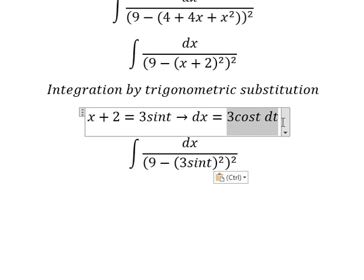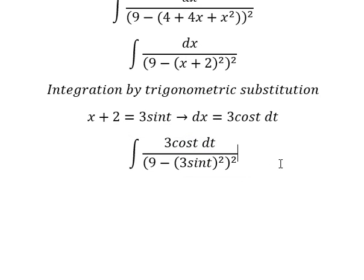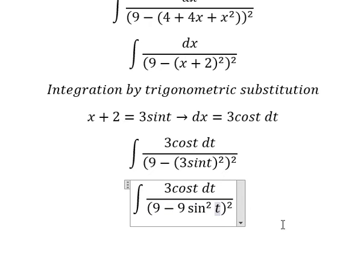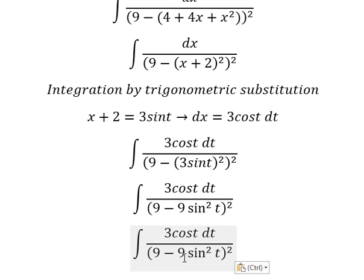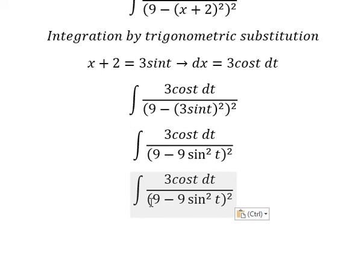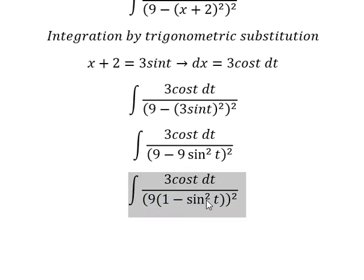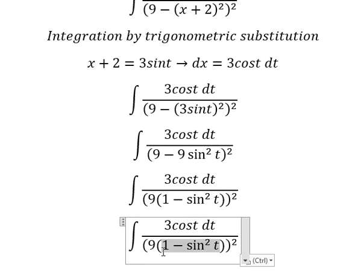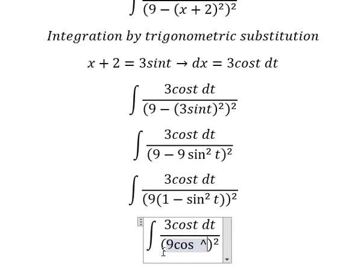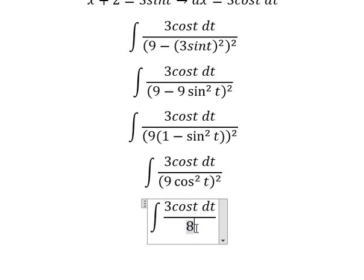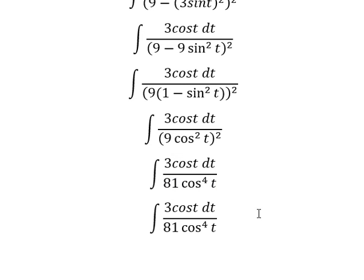Now I will substitute this in. We have 9 sin²(t) — number 9. We can do factorization, and this gives us cos²(t), so we have 81 cos⁴(t).